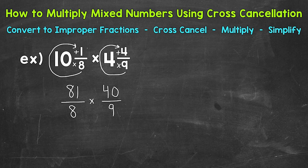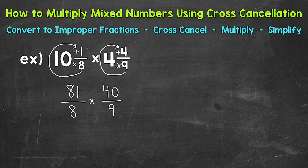81 eighths is equivalent to 10 and 1 eighth — it's just in the form of an improper fraction. Both of those are equivalent, so when we convert to an improper fraction we're not changing the value of anything. And 40 ninths is equivalent to 4 and 4 ninths. So we just have a numerator and a denominator and we are able to multiply.